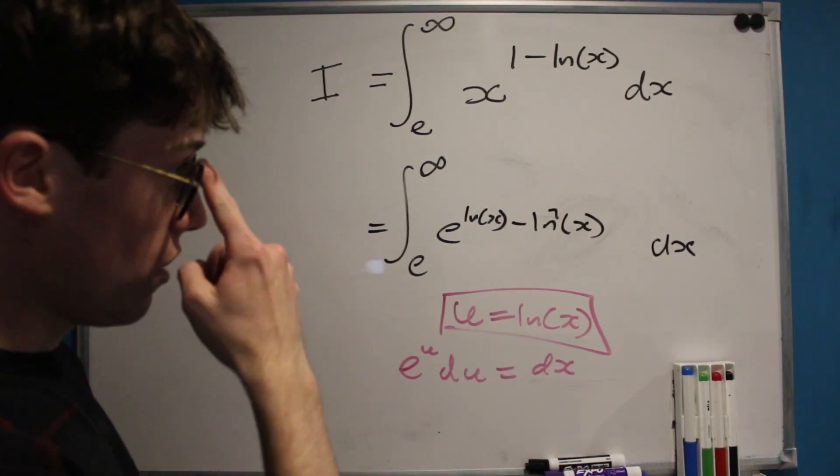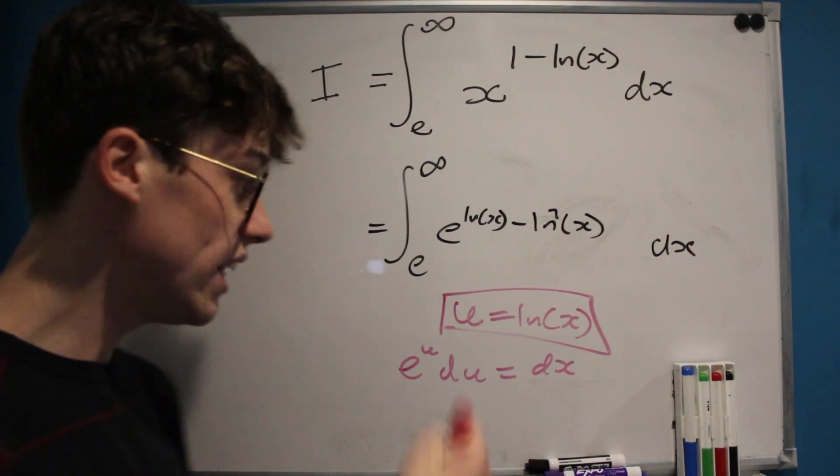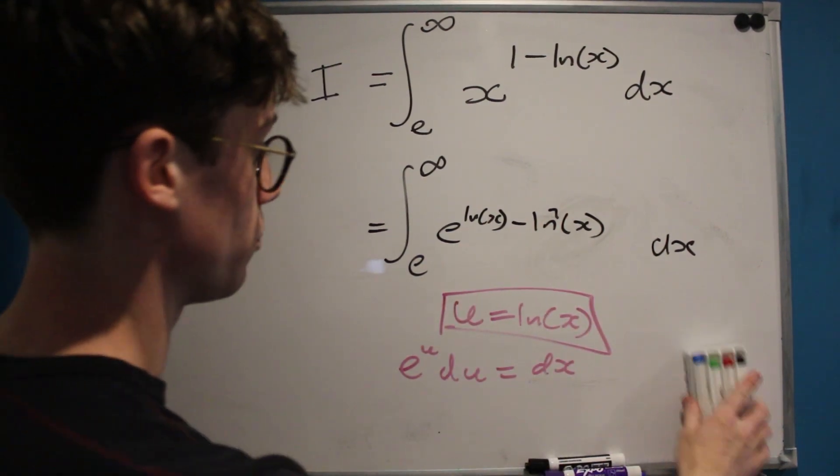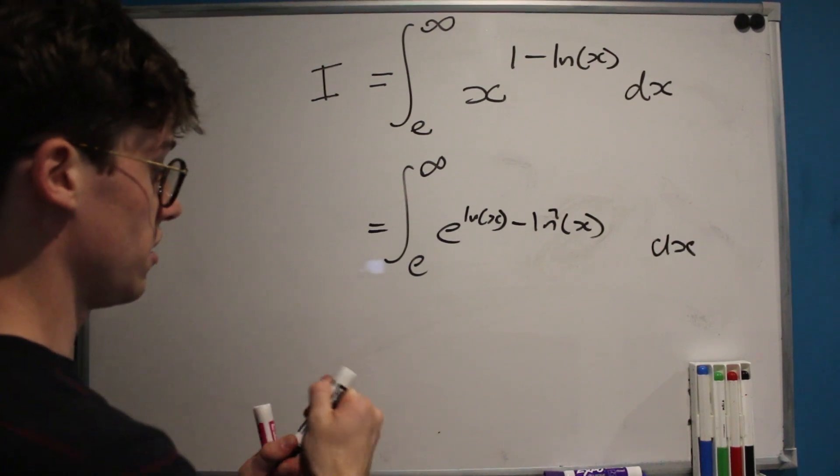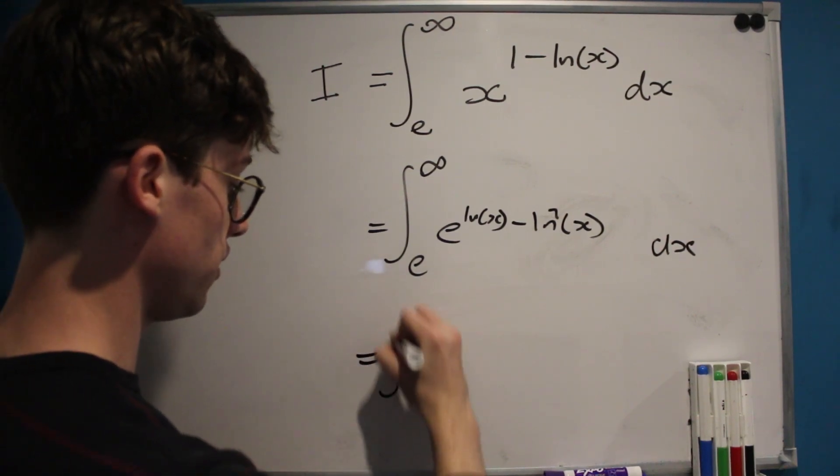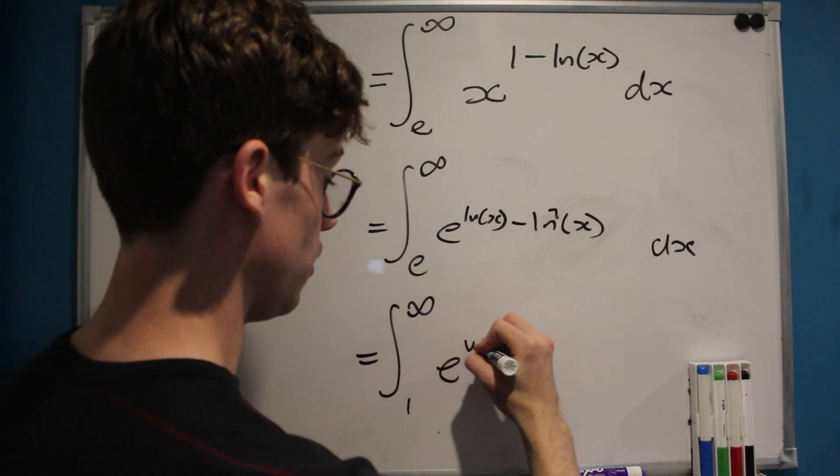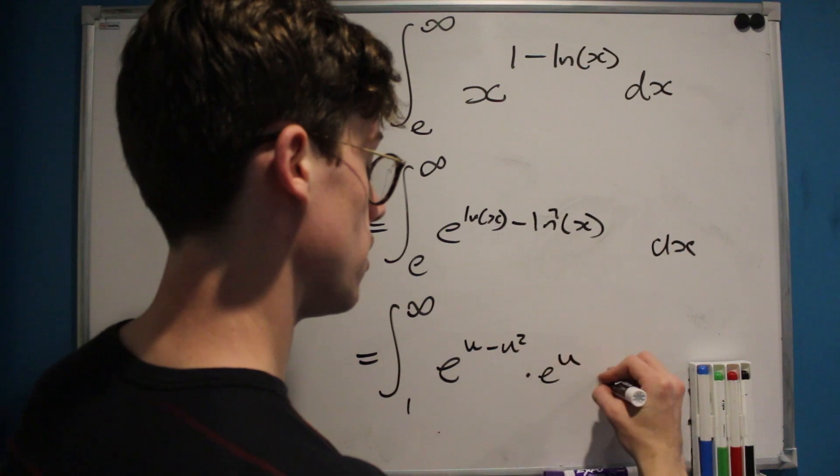So all we have to do now is make our final substitutions and consider the bounds. So clearly as x approaches e, u will approach 1, and as x approaches infinity, u will approach infinity as well. And so we can rewrite I as the integral from 1 now to infinity of e to the u minus u squared times e to the u du.